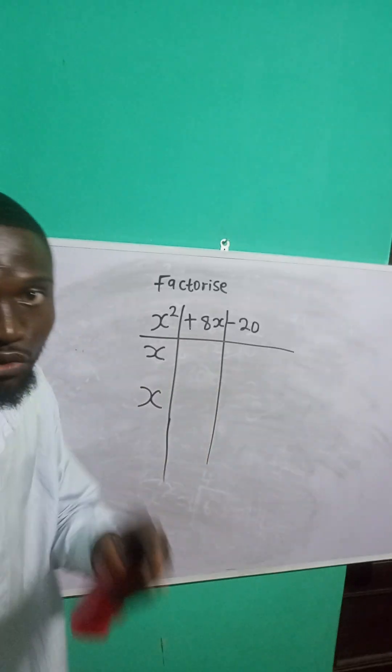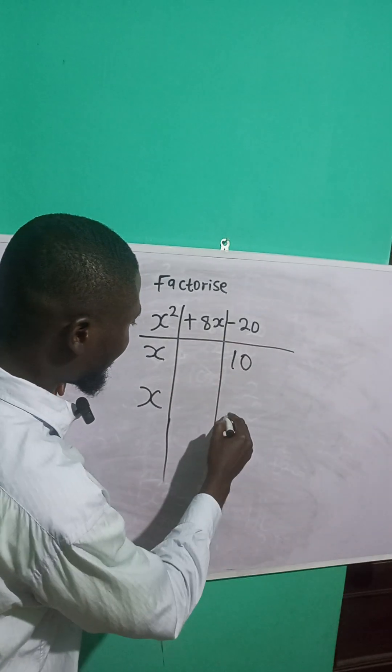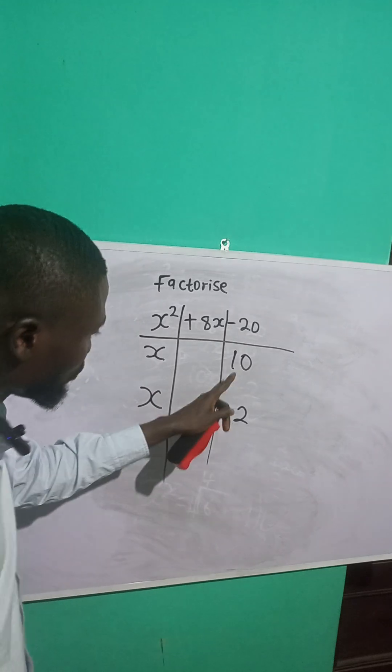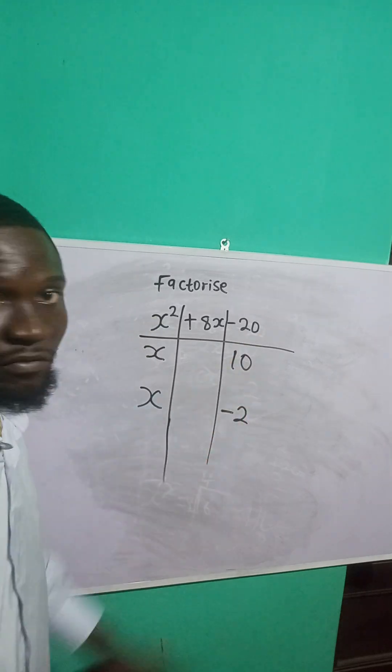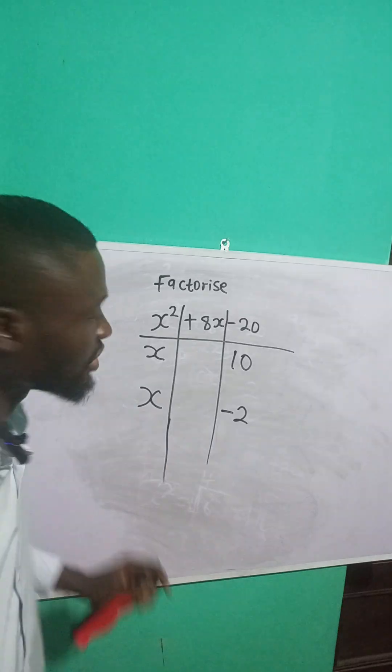Now, minus 20, what two numbers would I multiply to get minus 20? 10 and what? Minus 2. So 10 times minus 2 will give me minus 20, right? 10 times minus 2 will give me minus 20.